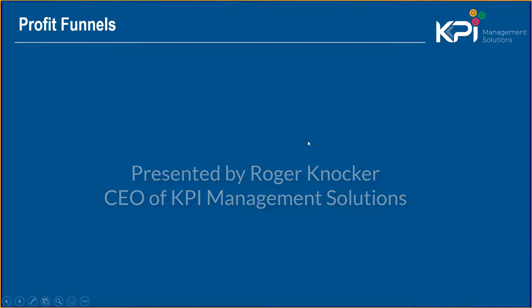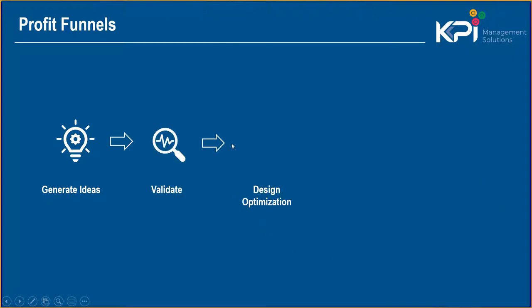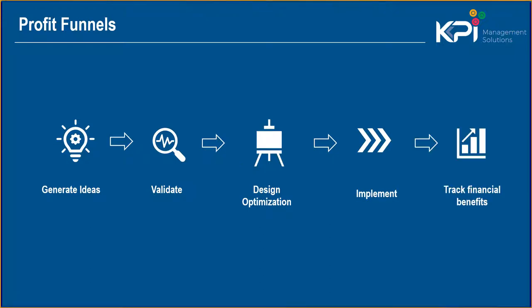In step four we run the concept of profit funnels. The first step is we generate ideas. In the second step we validate those ideas with data. The third step we design the changes we're going to do in the organization — take out waste, redesign a process, optimize it. The fourth thing is to implement what we've designed, and then the fifth thing is to track the financial benefits. This is key: we try to track income statement benefits.